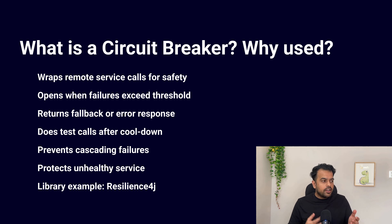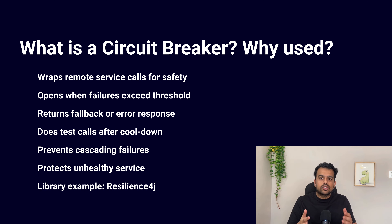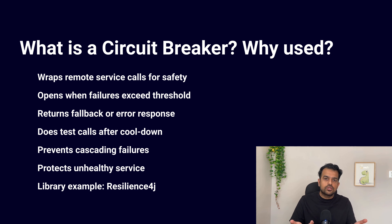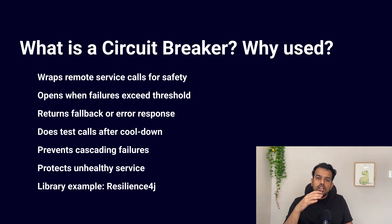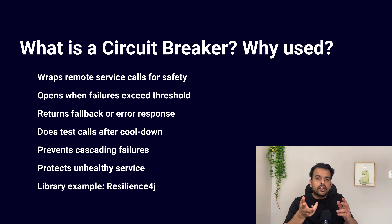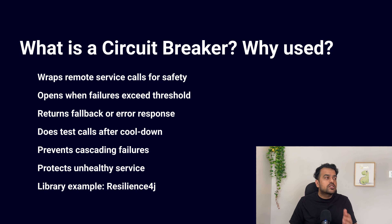In microservices, services depend on each other. If one service is slow or down and we keep calling it, every request will keep waiting or failing. A circuit breaker sits around that call — when the number of failures crosses a threshold, the circuit breaker opens and stops calling the service for some time. During that time it can return an error or a fallback response. After a cooldown period it allows a few test calls, and if those succeed, it closes again and traffic returns to normal. This protects three things: it prevents the failing service from extra load, protects the calling service from long timeouts, and protects the overall system from cascading failure. In real Spring Boot projects, we implement this using libraries like Resilience4J or built-in support from Spring Cloud.